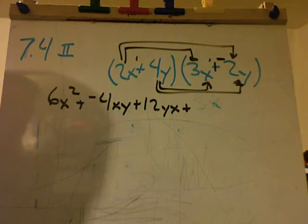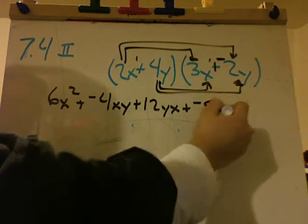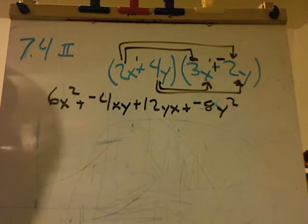And 4 times negative 2 is negative 8, y times y is y squared. Now I want to combine my like terms.